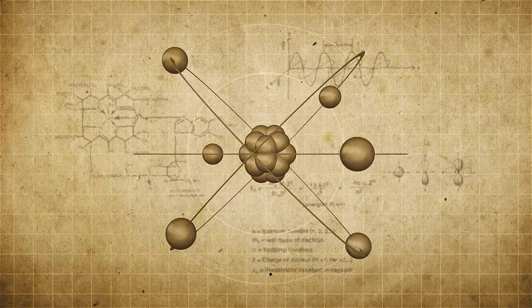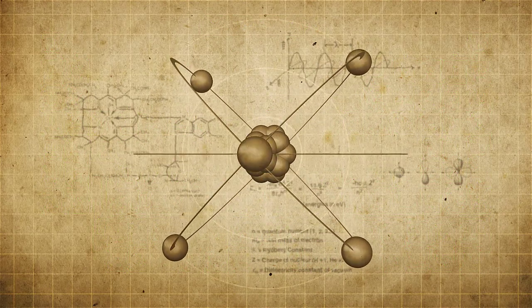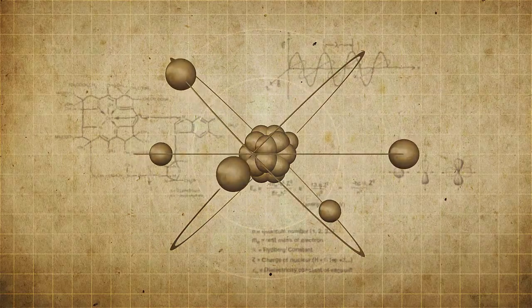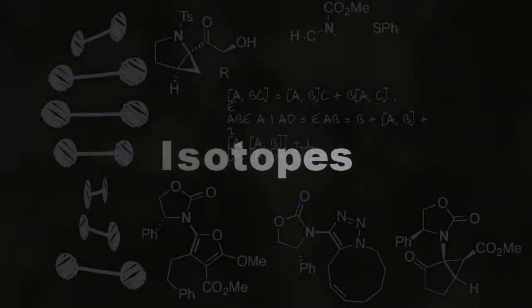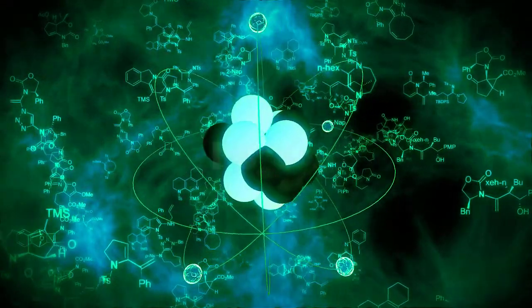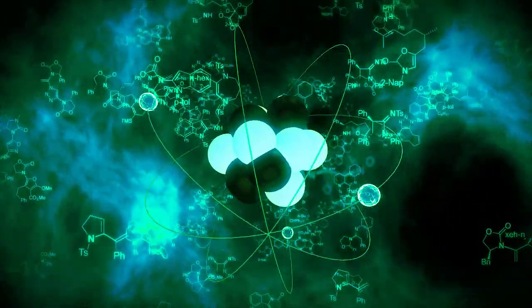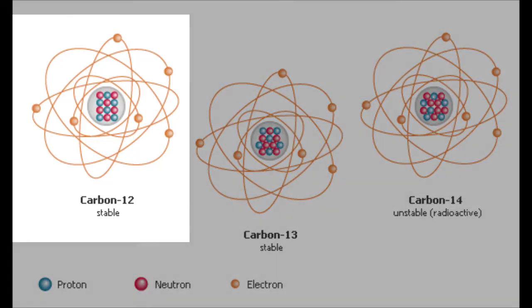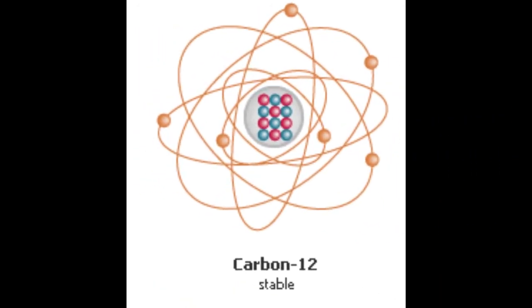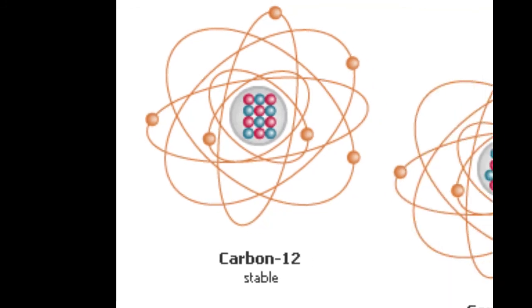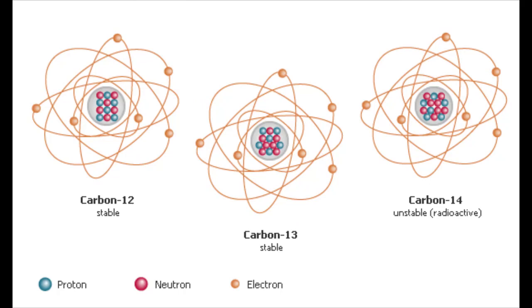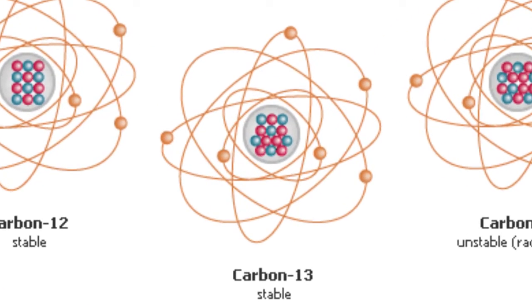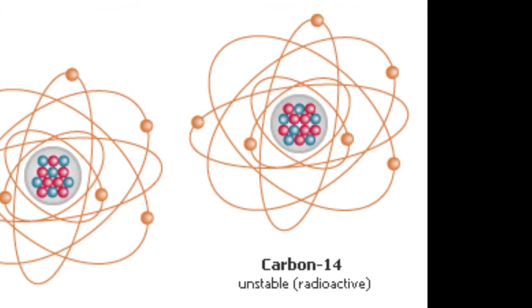The number of protons and electrons in an element are equal. The number of protons and neutrons may be equal for some elements, but are not equal for all of them. Isotopes. Although each element has a unique number of protons, it can exist as different isotopes. An isotope is one of the different forms of an element, distinguished from one another by different numbers of neutrons. The standard isotope of carbon is carbon-12. Carbon-12 has 6 protons and 6 neutrons, for a mass number of 12. All of the isotopes of carbon have the same number of protons. Therefore, carbon-13 has 7 neutrons, and carbon-14 has 8 neutrons.